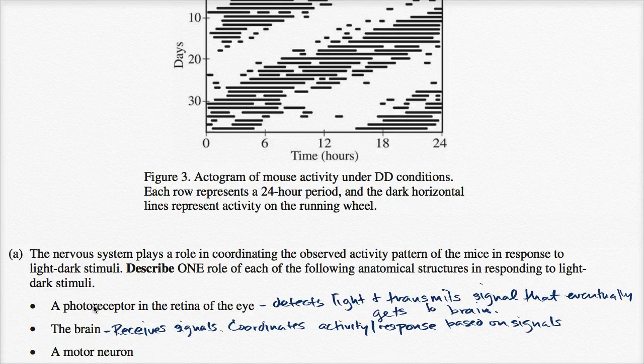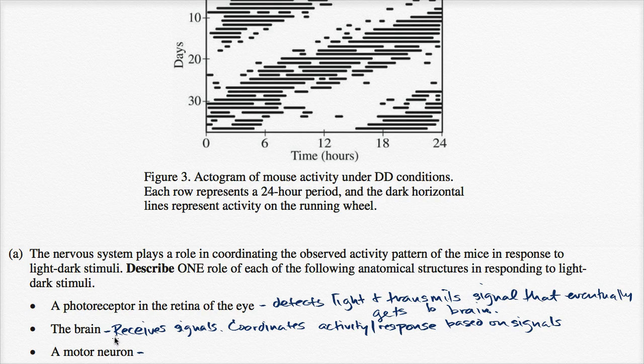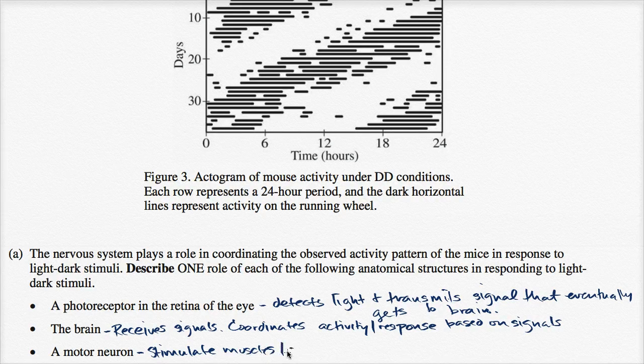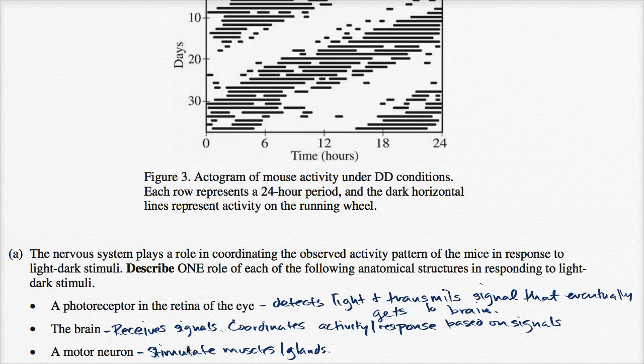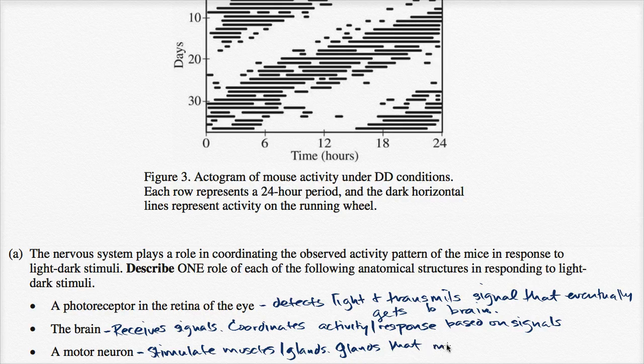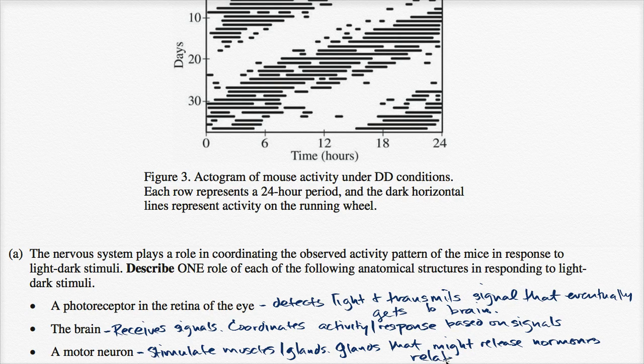So this is really just, do we know what a photoreceptor, a brain, and a motor neuron are, as related to this test. And then a motor neuron. Well, these are neurons that would stimulate, you tend to think of things like motor movement, like muscles. But they also control things like glands. So they stimulate muscles, glands. And glands could be especially relevant here because glands might be the things that release or don't release hormones that might put the mice to sleep or wake them up. So glands that might release hormones related to sleep and activity.